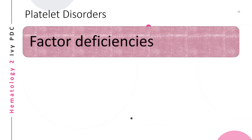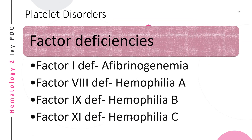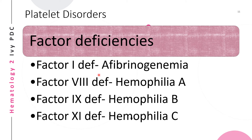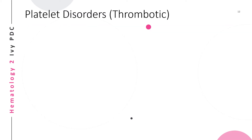Examples of factor deficiencies include: factor I deficiency, which causes afibrinogenemia; a deficiency of factor VIII is called hemophilia A; a deficiency of factor IX is hemophilia B; and a deficiency of factor XI is called hemophilia C.